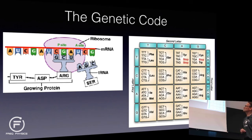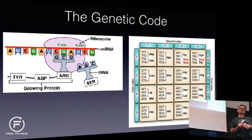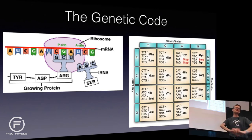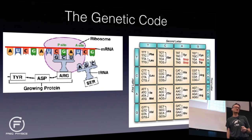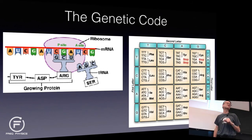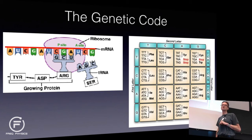If you have four bases and sit three of them together, how many different combinations can you have? 4 to the power of 3 — so 4 by 4 by 4, that's 64 combinations. But how many amino acids are there? 20. That's not the same as 64. So they lied to you. There are not 44 more amino acids.